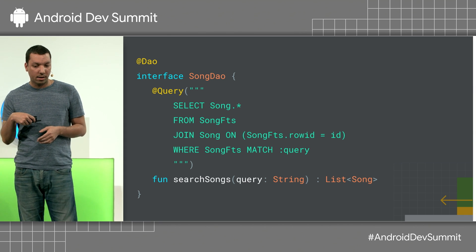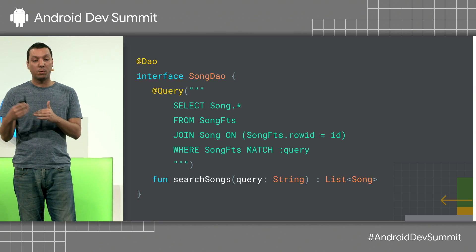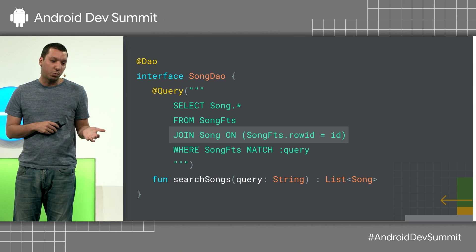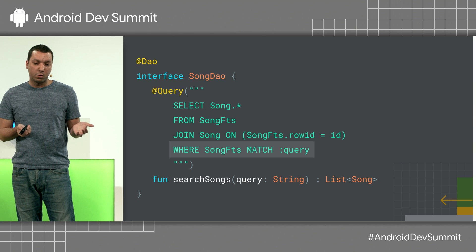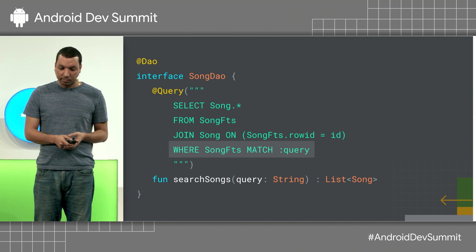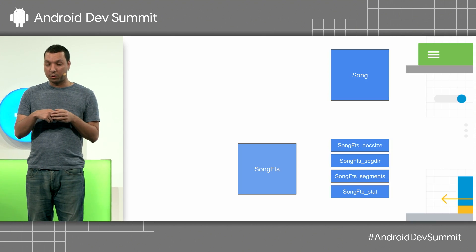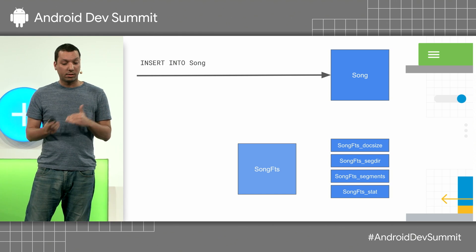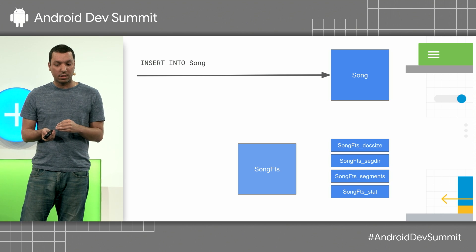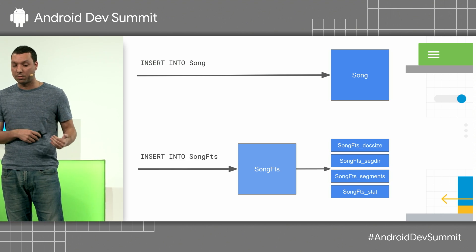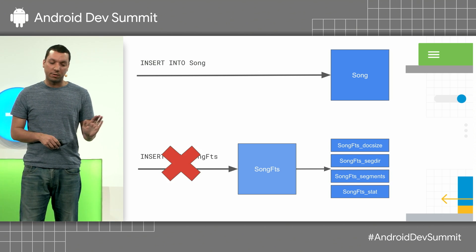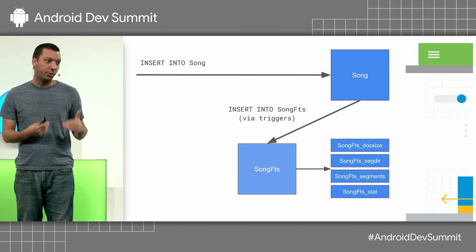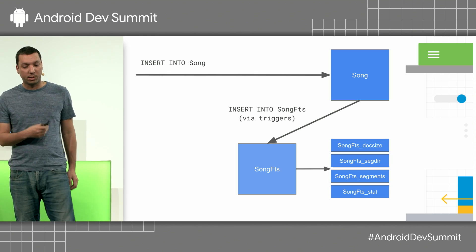To query this FTS table with external content, you do have to query from the virtual table and then do a join to get the songs, and you would still use MATCH. One thing to note: because these are two different tables, when you insert into the song table, things are not actually inserted into the FTS virtual table, which means your indexes don't get updated — you have to do that yourself. But Room will actually create triggers for you to keep these two things in sync.